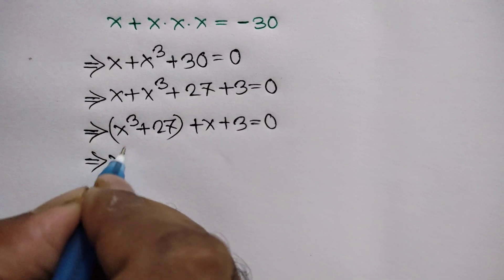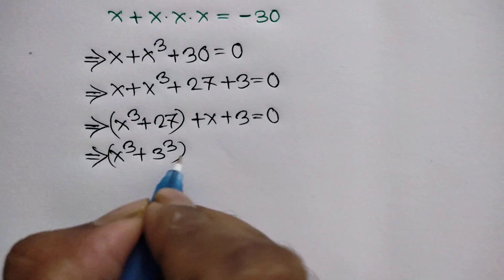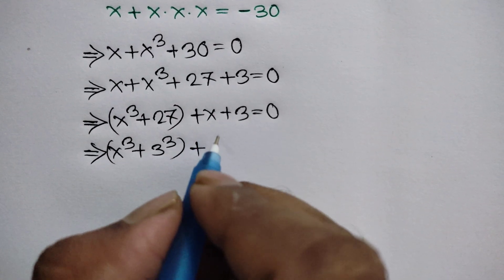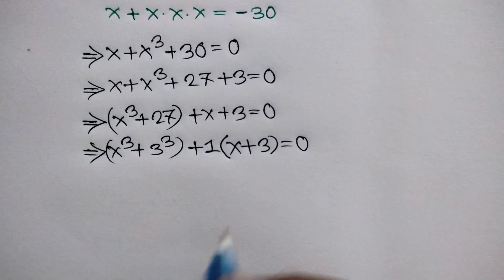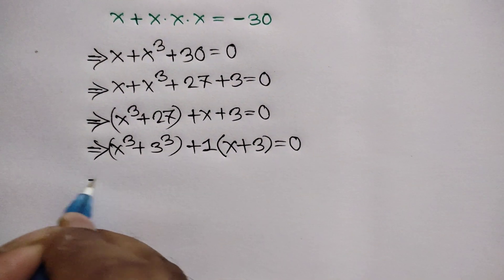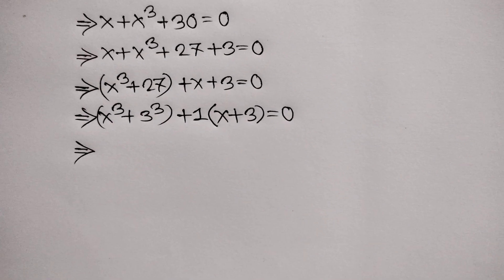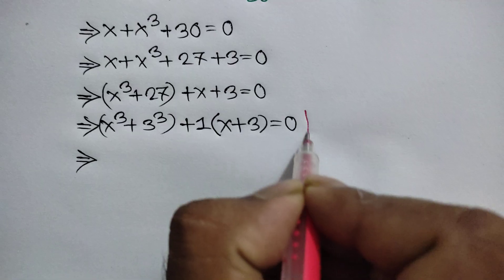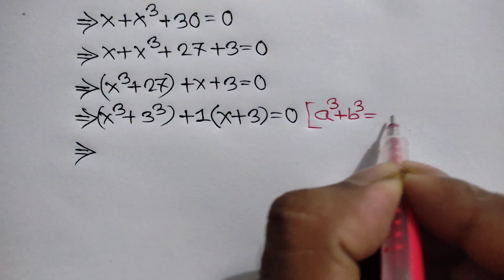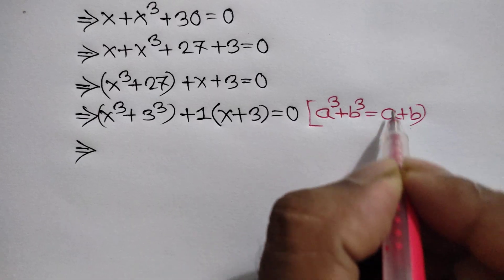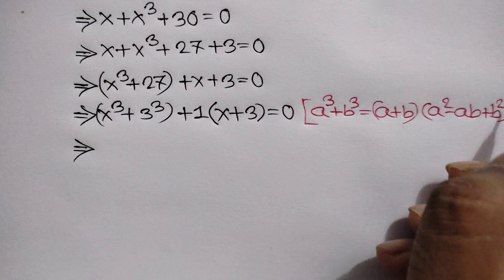Now x cubed plus 27 can be written as x cubed plus 3 cubed. And we can take out a common factor of 1, giving us x plus 3 equals 0. Here we can use an algebraic formula: we know that a cubed plus b cubed is equal to a plus b, times a squared minus ab plus b squared.